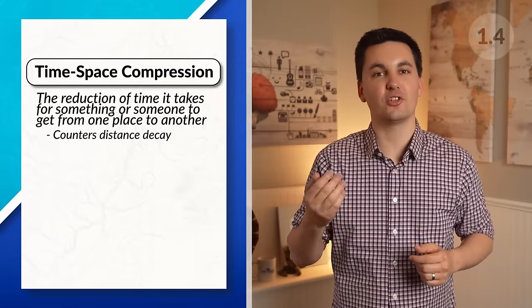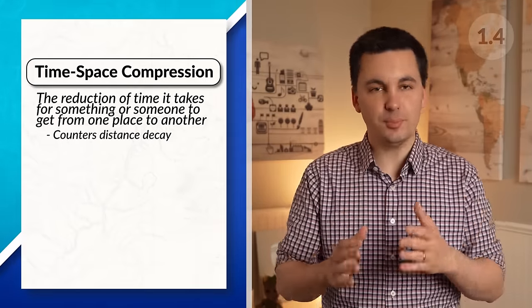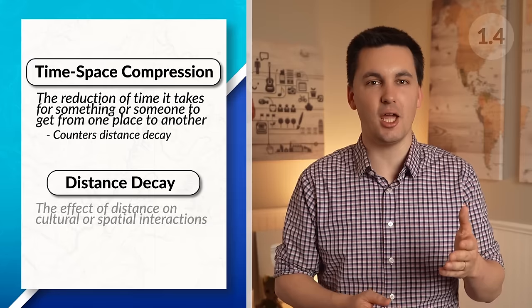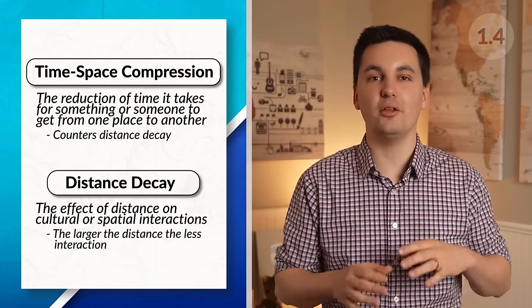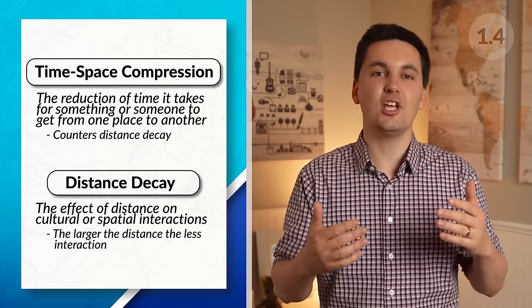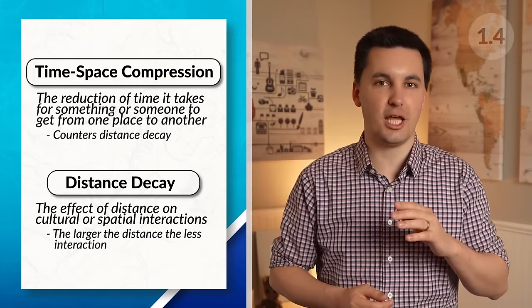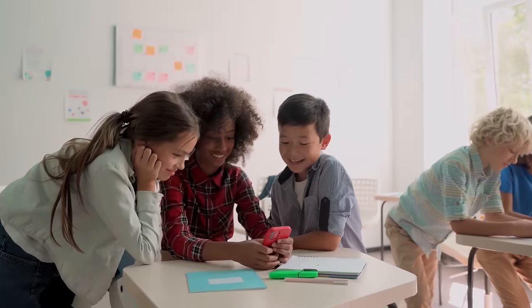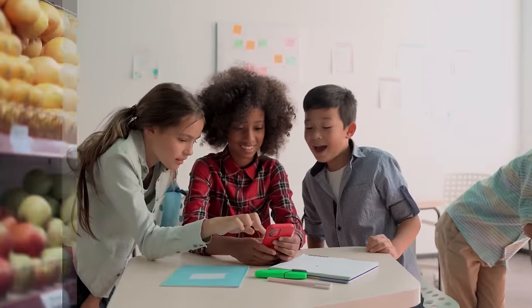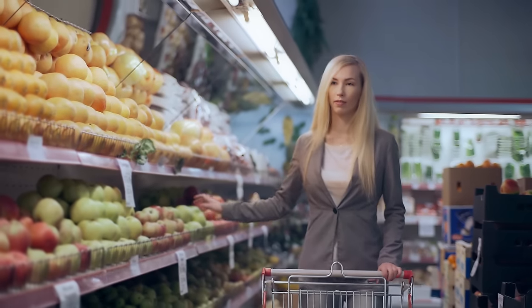This phenomenon is known as time-space compression. Traditionally, places and people were impacted more by distance decay, which looks at how likely a person or place is to interact with another — the farther apart, the less likely they are to interact. This is why you are more likely to hang out with people that attend your school or shop at stores near you. But thanks to advancements in technology, the impact of distance decay has decreased as it's become easier than ever to interact with other places and people around the world.